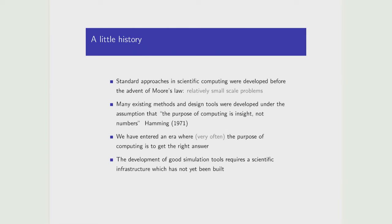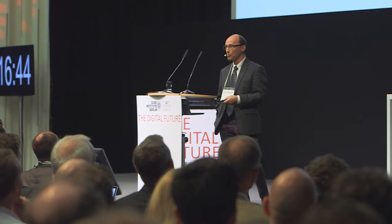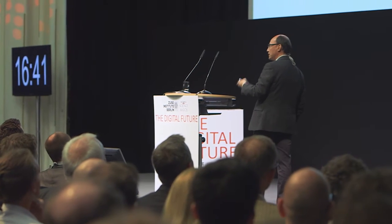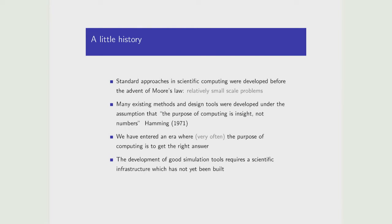Let me share my view of the history of scientific computing. Almost all the methods used in scientific computing were developed before Moore's Law. The algorithms we typically teach in numerical analysis were invented between roughly 1850 and 1940 — they had no idea supercomputers were coming. As Hamming said famously, the purpose of computing is insight, not numbers. But I think we have entered an era where you actually want to compute to get the right answer — quantitative precision in a physically complicated environment.